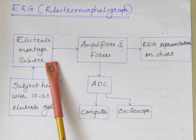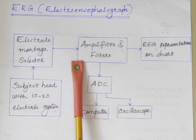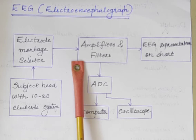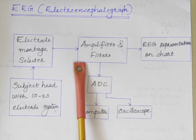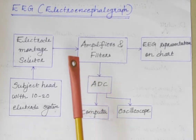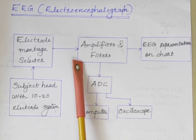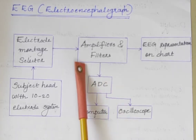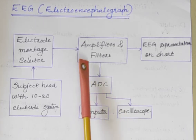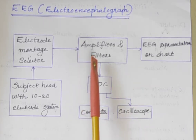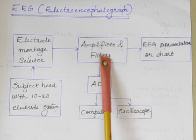From the electrode montage selector, EEG signals are given to the amplifiers and filters. The function of the amplifier is to amplify the EEG signals, because EEG signals have amplitude levels in the microvolt range. So it is compulsory that they are amplified before further processing.